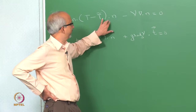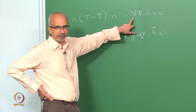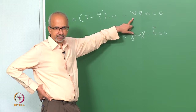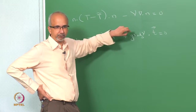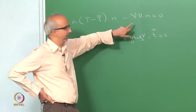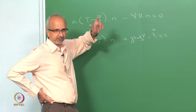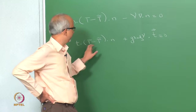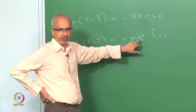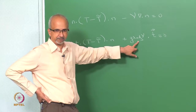In the normal stress boundary condition, it is only the surface tension which appears, not the variation of the surface tension. That is, at every point on the interface, the local value of the surface tension tells you what the difference is between the normal stresses, whereas the difference in the tangential stresses is given by the gradient of the surface tension.